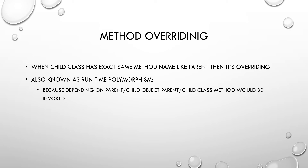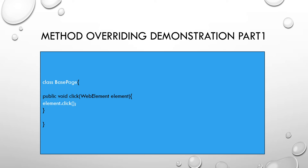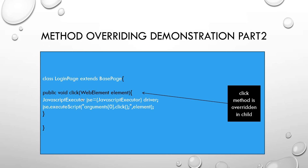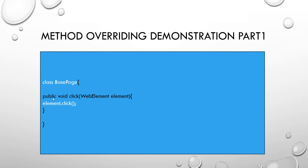Now that we've understood inheritance and method overriding, let's look at how to implement them in a test automation framework. In the test automation framework we usually deal with the Page Object Model. In Page Object Model, we have one common page - sometimes called base page - that has common functionality usable across all pages, such as click, display, and page load functionality.